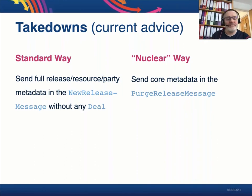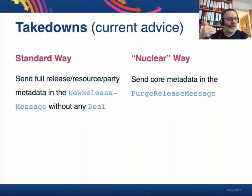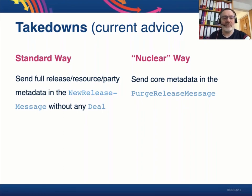Takedowns are again a direct follow-up on what I've said already. Takedowns is most likely the area where DDEX has gone through the most iterations — we have now come to a place that will stick because it's exactly the same principle as before. If you send a normal ERN message without any deal, that means by virtue of what we've discussed that all the deals have ended — and that is pretty much the definition of a takedown. Just send a normal ERN message with all the release, resource, and party information and leave out any deals. There you go — you have your takedown notice.